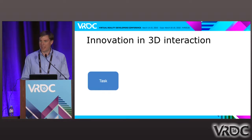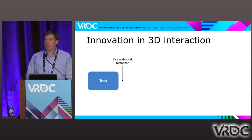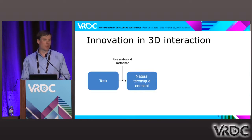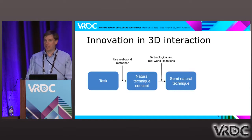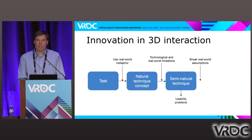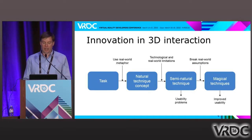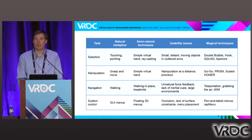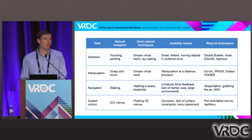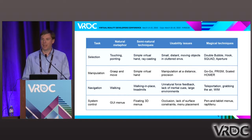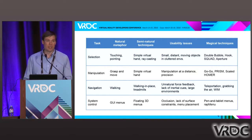I wanted to try to abstract that innovation process. We start with one of these universal tasks — in this case, selection. We think about a real-world metaphor, touching or pointing, and come up with a concept for a natural interaction technique. But because of limitations in technology and the real world, we end up with a technique that's only semi-natural, resulting in usability problems. The way to innovate is to break real-world assumptions — do things that are magical or beyond what we can do in the real world. That gives us a magical interaction technique with improved usability. There are examples for all interaction tasks: selection, manipulation, navigation, and system control.